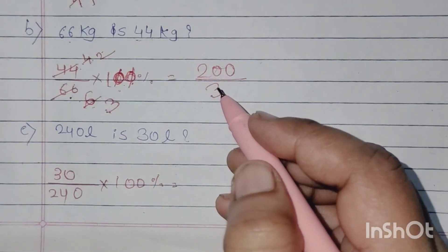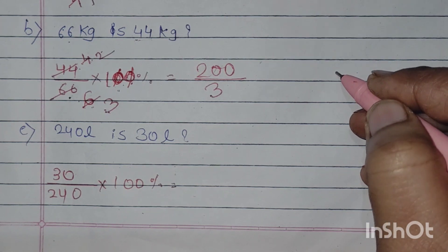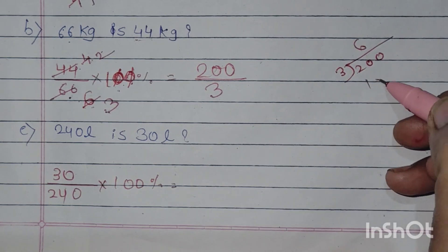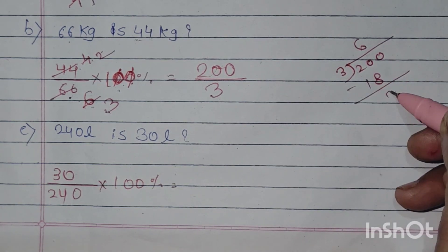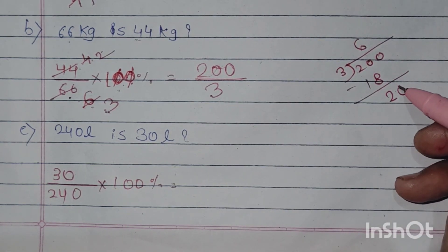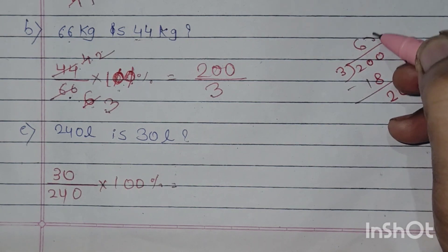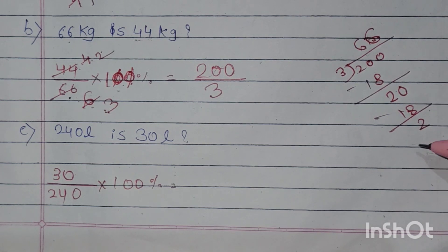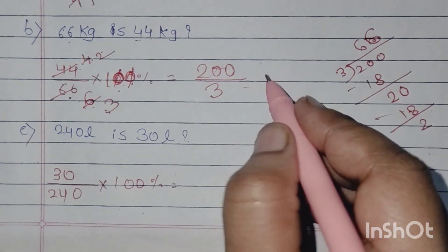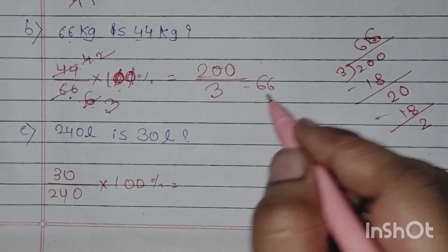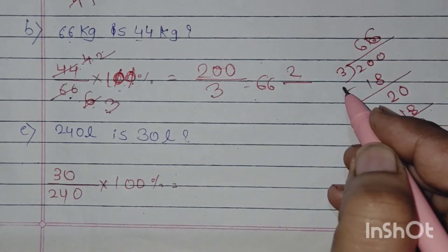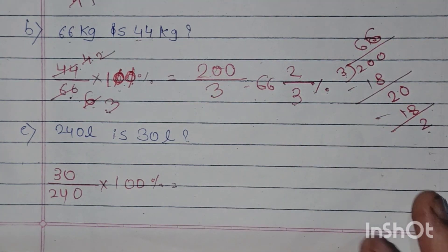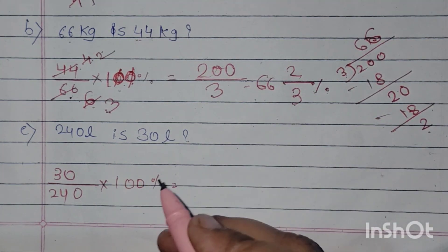आगे 100 into 2 कर दो, तो 200 हो जाएगा, और इस 3 से हम divide करेंगे। Divide आपको कैसे करना है मैं दिखाती हूँ: 3 into 6 is 18, यहाँ पर आएगा 2, यहाँ से 0 मिलेगी, फिर 3 into 6 is 18, फिर से 2. तो यह लिखोगे कैसे — 66 whole number पहले यहाँ पर लिखना है, यह 2 ऊपर चला जाएगा और 3 नीचे — 66 and 2 upon 3 percent.